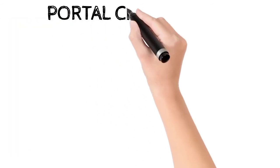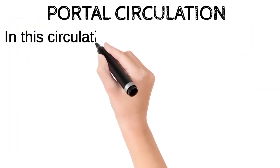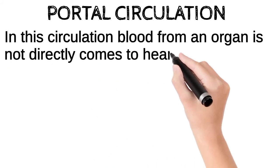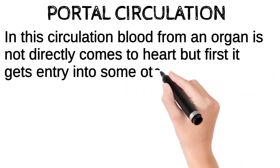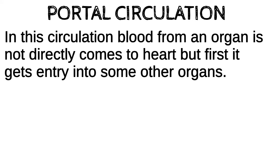Portal circulation. In this circulation blood from an organ does not directly come to the heart but first gets entry into some other organs. For example, blood from some parts of the gastrointestinal tract, mainly from the small intestine, is first carried to the liver.